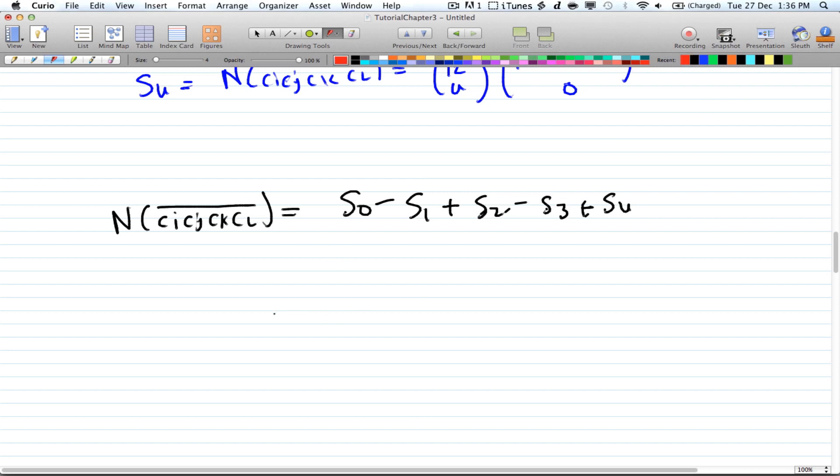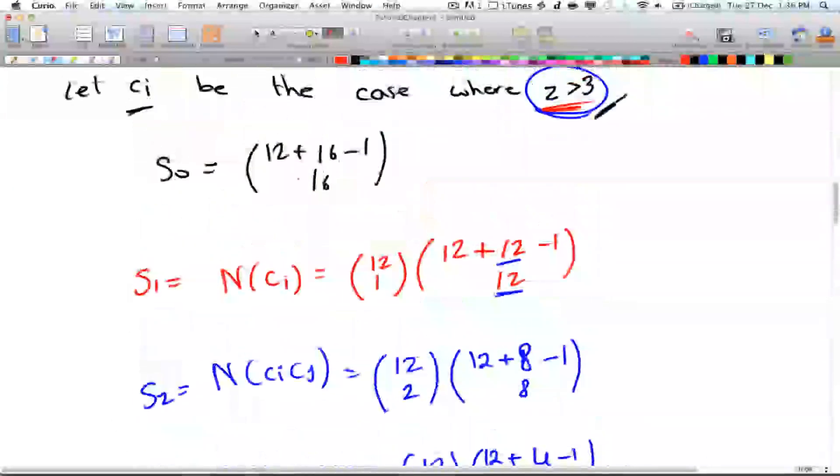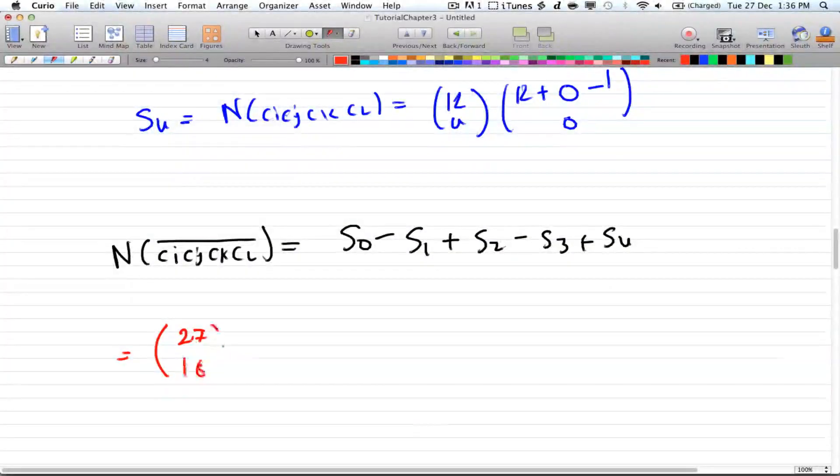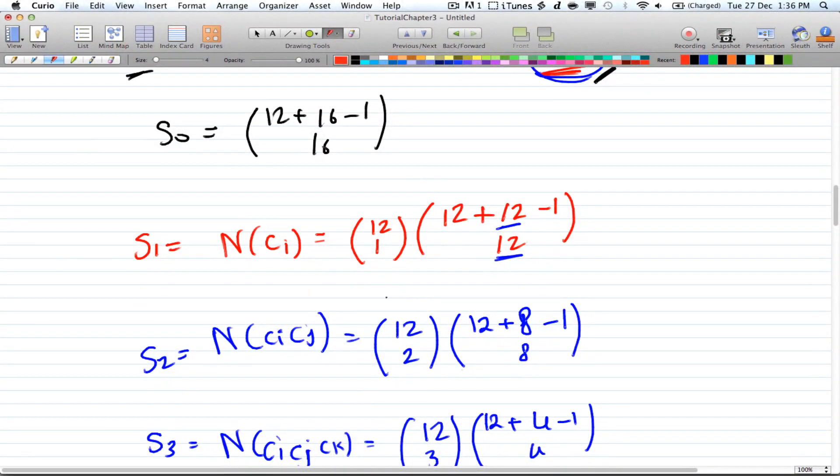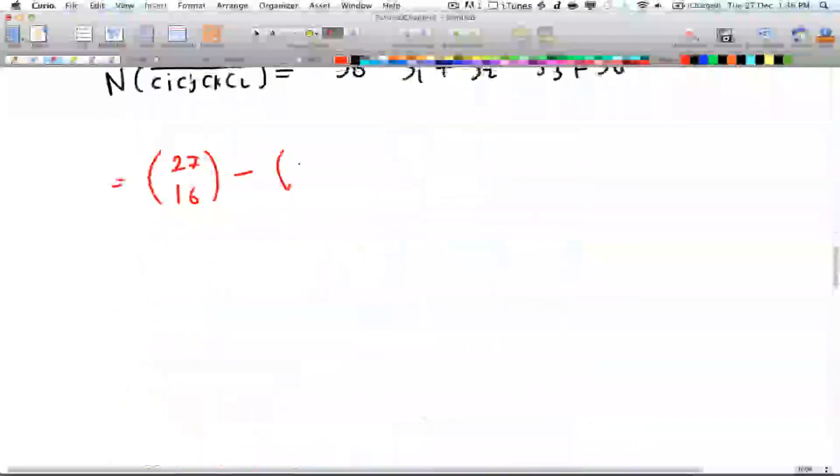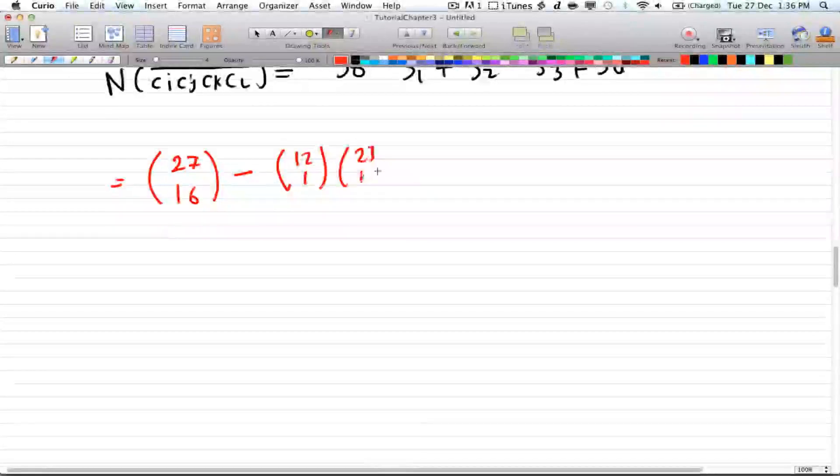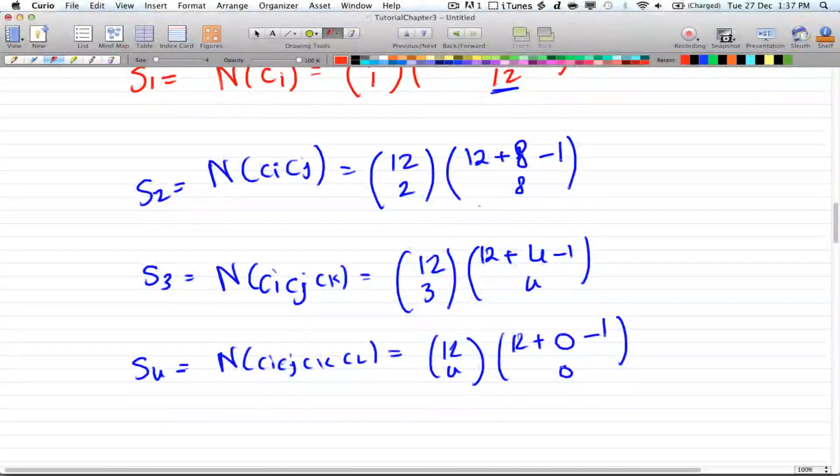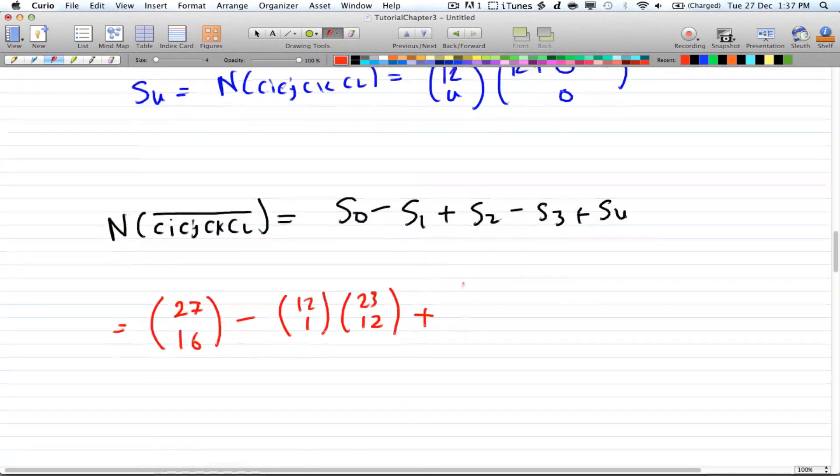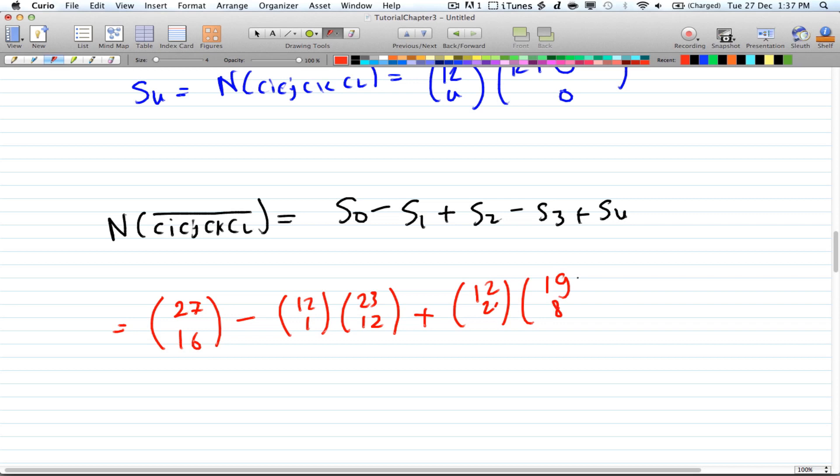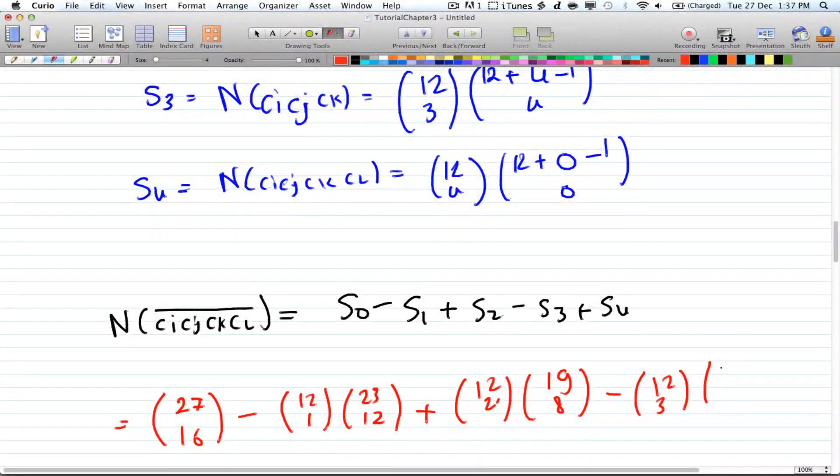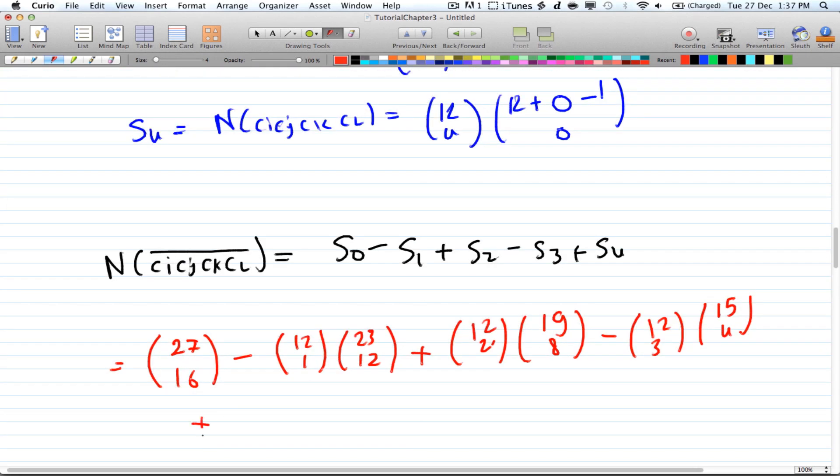So I'll just plug these numbers and values in. So you got your s0 is 12 plus 16 minus 1, that's 27 choose 16. So you got 27 choose 16 minus s1, which is 12 choose 1, and 23 choose 12, plus s2, which is 12 choose 2 times 19 choose 8, minus s3, and that is 12 choose 3 times 15 choose 4, and lastly, plus 12 choose 4, and 11 choose 0.